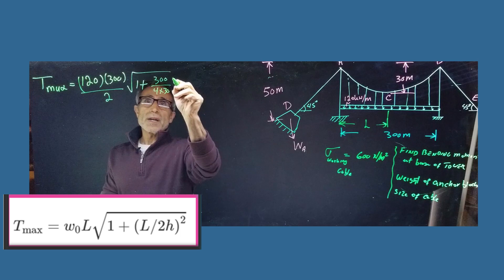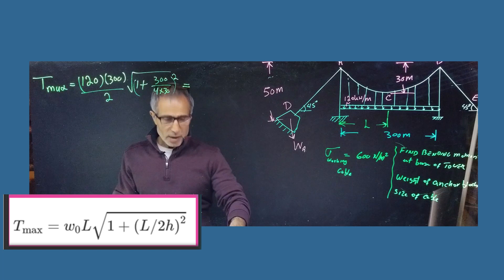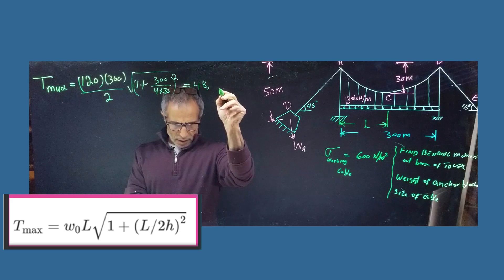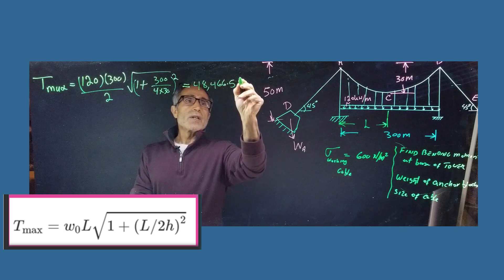multiply by square root of 1 plus 300 divided by 4 times 30. So, and this whole thing is squared, and we're going to end up with, the answer is going to be 48,466.5 kilonewton.